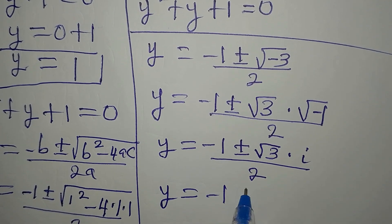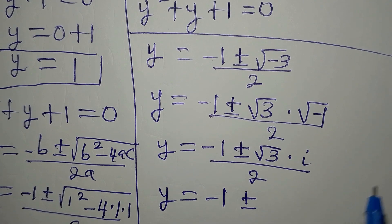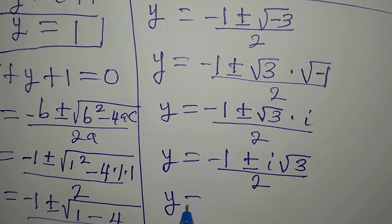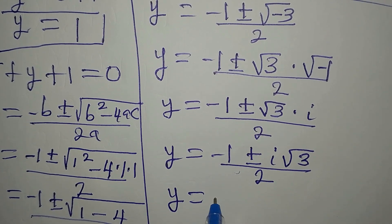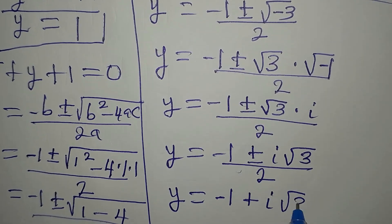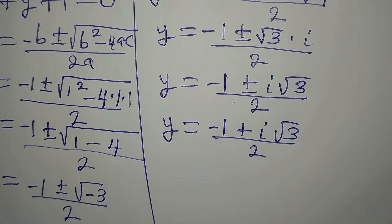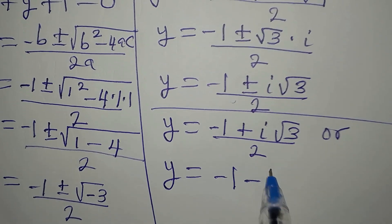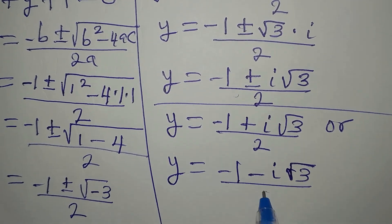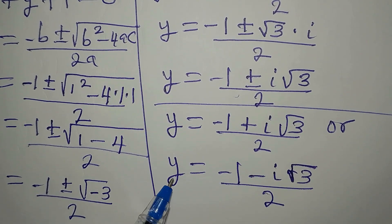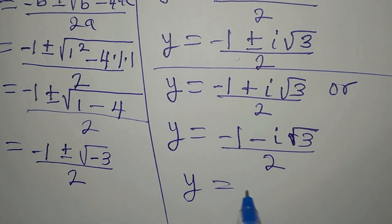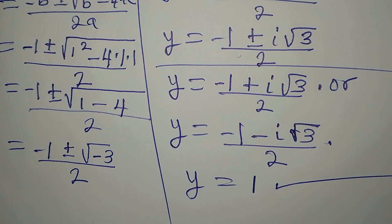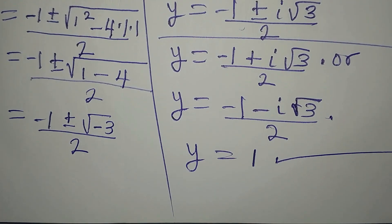This gives us two solutions: y = (-1 + i√3) / 2 or y = (-1 - i√3) / 2. So the first solution we got is y = 1, which is the only real solution. The other two solutions are imaginary. Thank you for watching — if you love this video, subscribe to my channel.